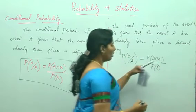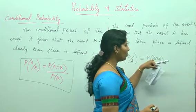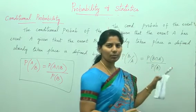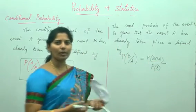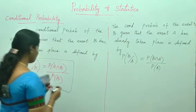Now see this numerator P of B intersection A can also be written as P of A intersection B because it is a commutative law. A intersection B is equals to B intersection A. This is what the conditional probability.